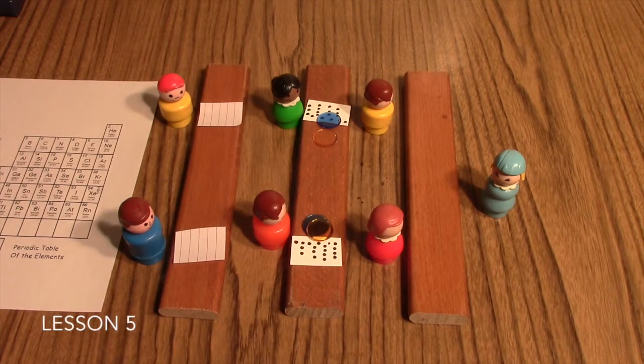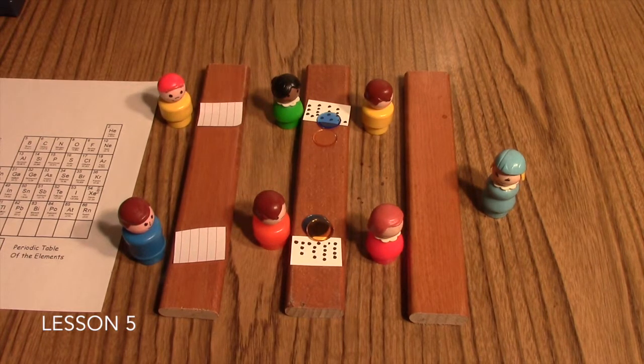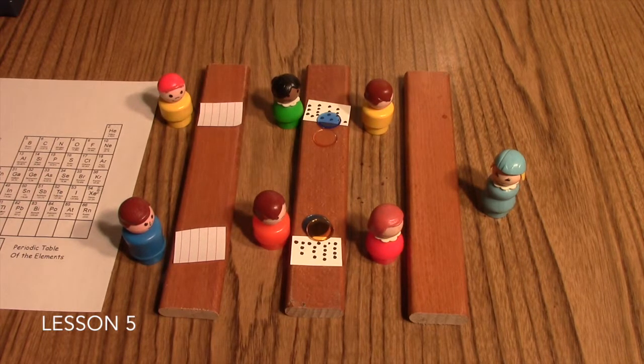Now in lesson 5 you have introduced orbital notation to your students. So this is the orbital notation version of the Teamwork game. This game is set up just like you did earlier when you did the board filling version of the game.